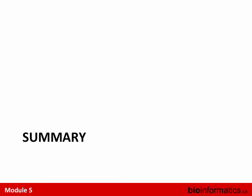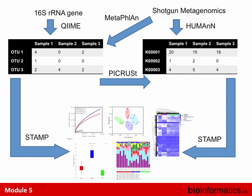Summary of the two-day workflow: you can generate OTU tables from 16S data, or use metagenomic data with MetaPhlAn to get a taxonomic table, then use STAMP to visualize. From 16S OTU tables you can use PyCrest to predict functional composition. From shotgun metagenomics data you use Diamond and HUMAnN to get the KEGG ortholog table, and then STAMP to examine functional differences. That's what the tutorial this afternoon will walk you through.